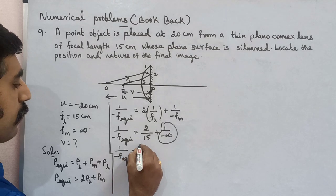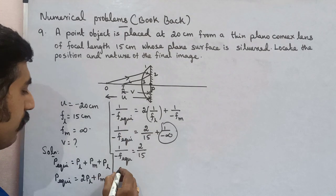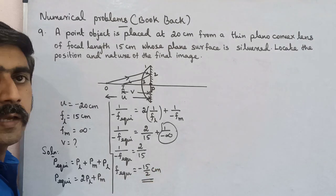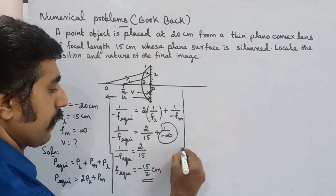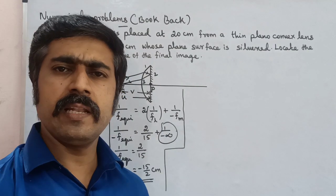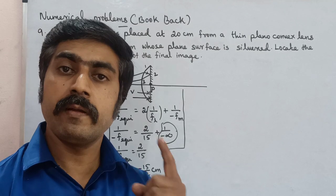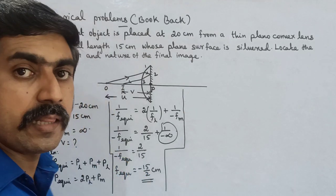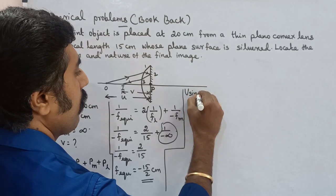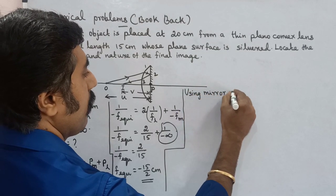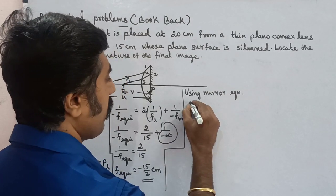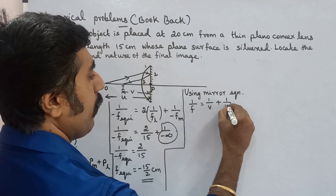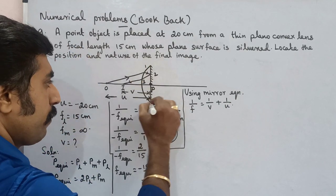Therefore, f_equivalent = -15/2 cm. The silvered lens acts as a modified mirror. Using the mirror formula: 1/f = 1/v + 1/u, and since the silvered lens is equivalent to a mirror, we apply 1/f_equivalent = 1/v + 1/u.